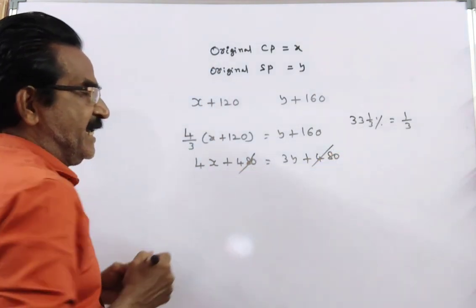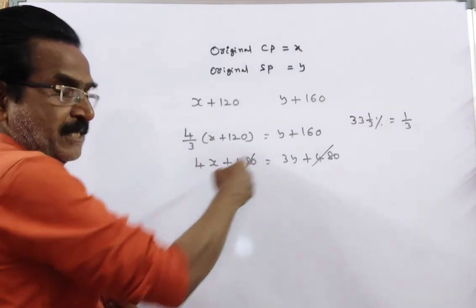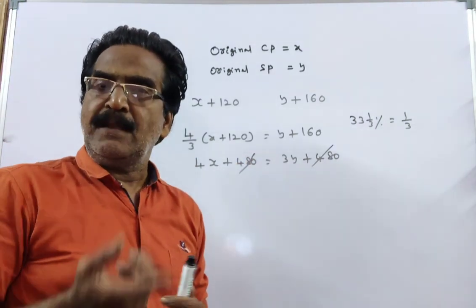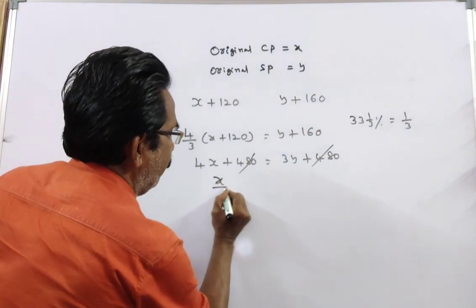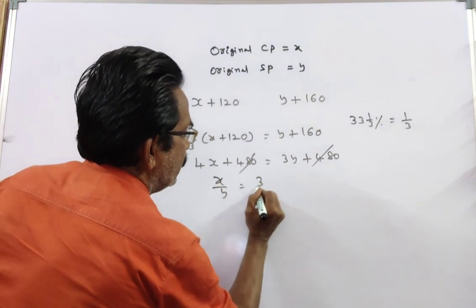480 gets cancelled. So 4X is equal to 3Y. 4X is equal to 3Y implies X by Y is equal to 3 by 4.